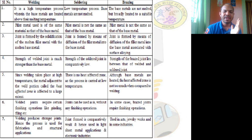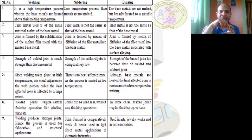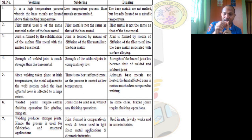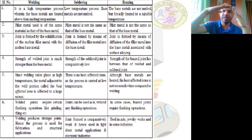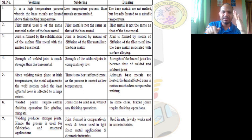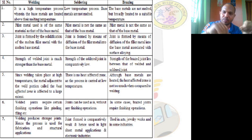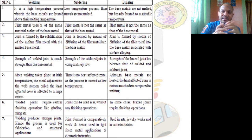Welded joints are so strong that the welded portion is even stronger than the base material. In contrast, soldered wires can be pulled apart by hand. Welding is used in structural applications like roof trusses, compound gates — everything that requires load-bearing capacity is welded due to its strength.